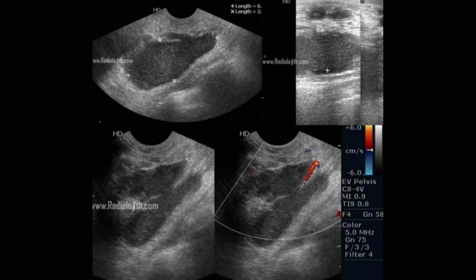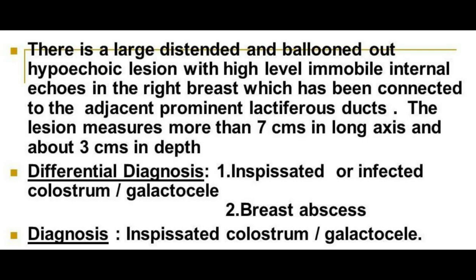The third case reveals a large, distended, and slightly ballooned-out hypoechoic lesion with internal echoes. Few connections are noted between the lesions. No vascularity is noted within the lesion, though some vascularity was noted in the wall. The differential diagnoses are: one, galactocele; two, inspissated or infected colostrum; three, breast abscess.